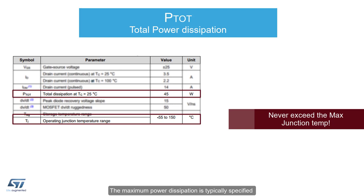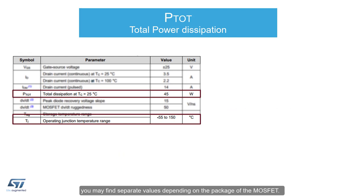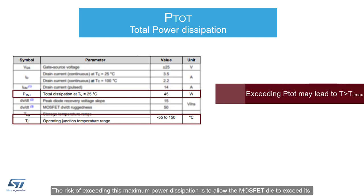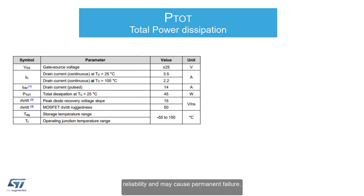The maximum power dissipation is typically specified assuming that the case temperature is held to a constant 25 degrees Celsius. Given this condition, we can use the TJ and thermal resistance RTHJ2C, found elsewhere in the datasheet, to calculate the P-TOT. Since this parameter is dependent on thermal resistance, you may find separate values depending on the package of the MOSFET. The risk of exceeding this maximum power dissipation is to exceed the junction maximum temperature rating, which will degrade performance, reliability, and may cause permanent failure.